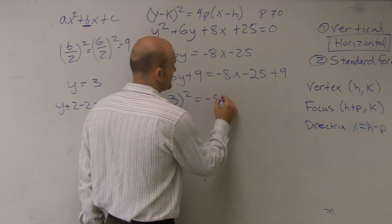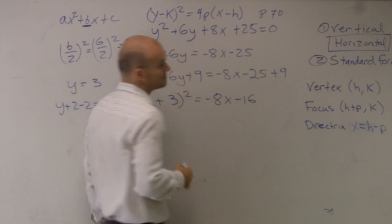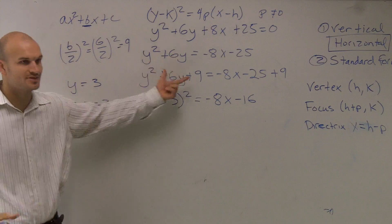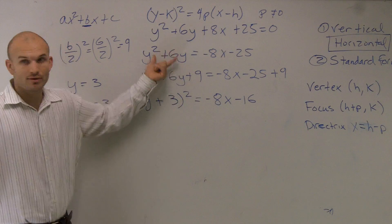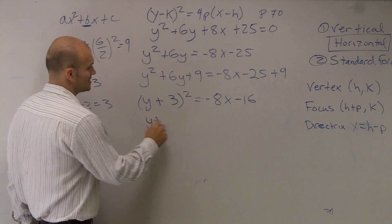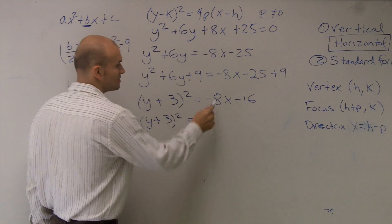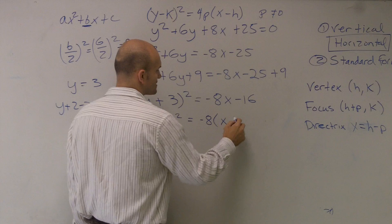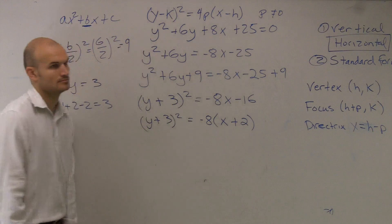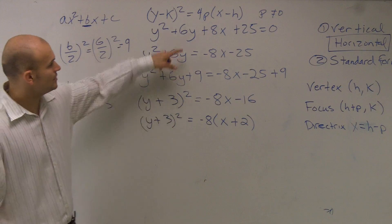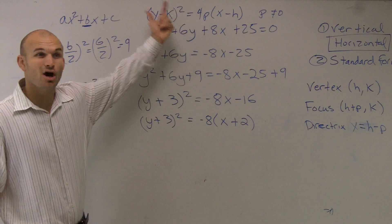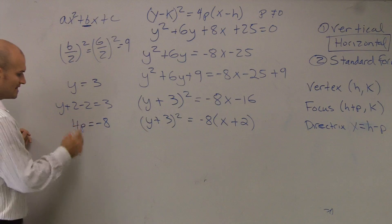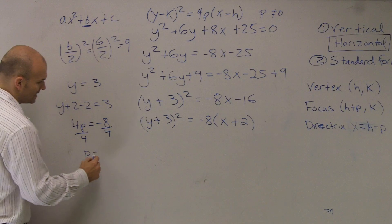That equals negative 8x minus 16. And yes, you can factor out a negative 8. So I have (y plus 3) squared equals negative 8 times (x plus 2). It's looking like the formula, but I need to find my value of p. I can say 4p equals negative 8, so dividing by 4 gives p equals negative 2.